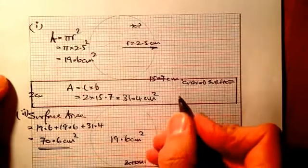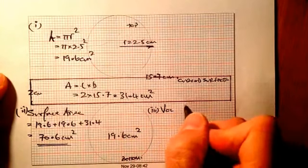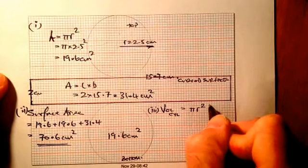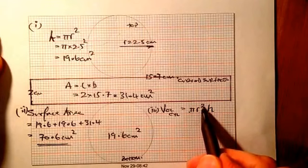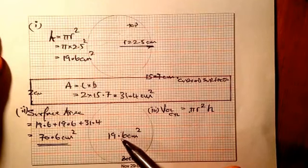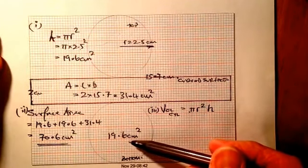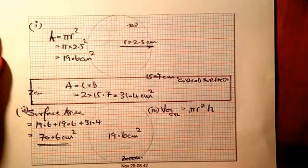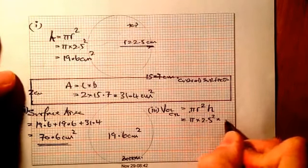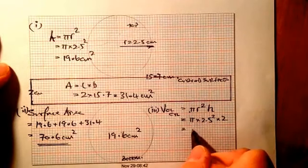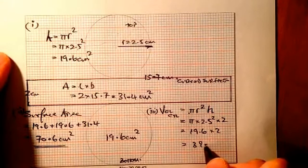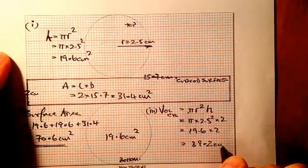For the volume of a cylinder: volume equals pi r squared times the height. Remember pi r squared is just the area of the circular face — a cylinder is like a special prism. Pi times 2.5 squared times the height of two: we've already worked out 19.6 times two gives a total volume of 39.2 centimetres cubed.